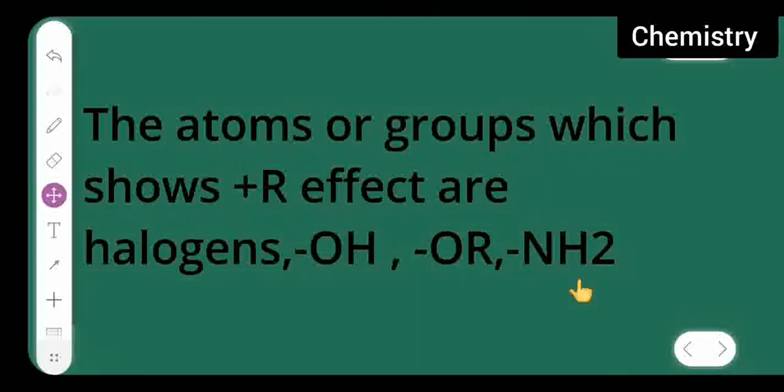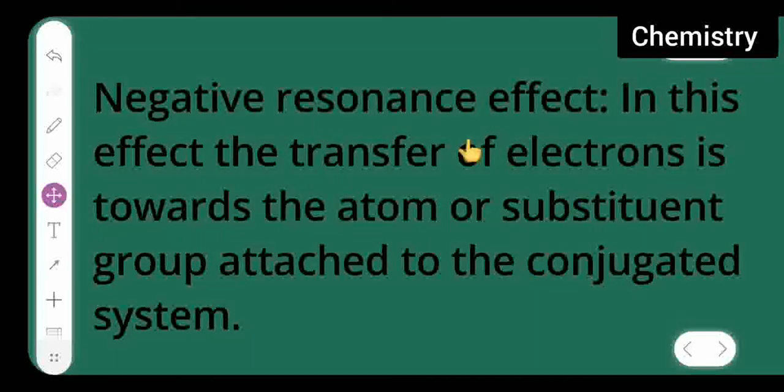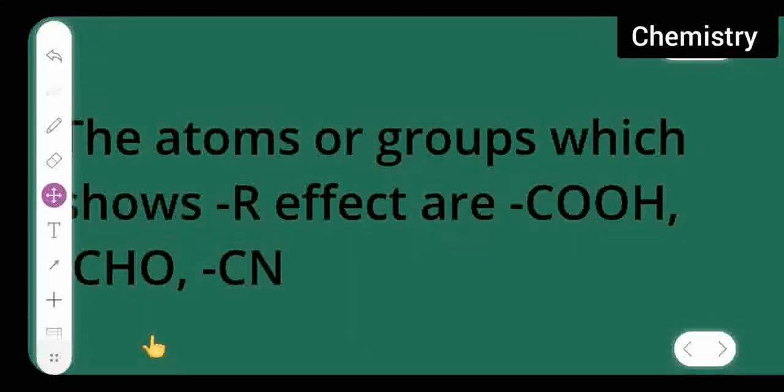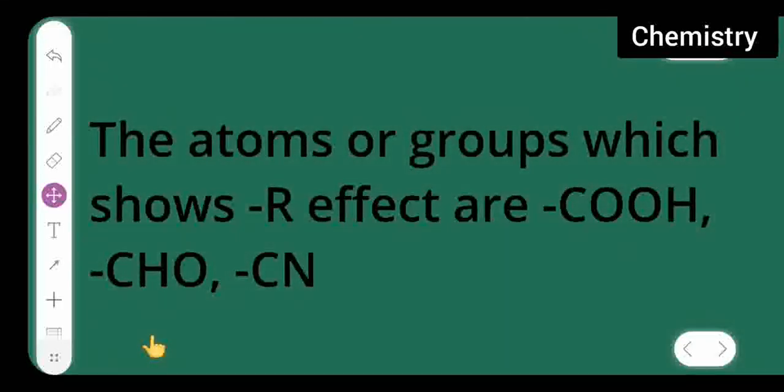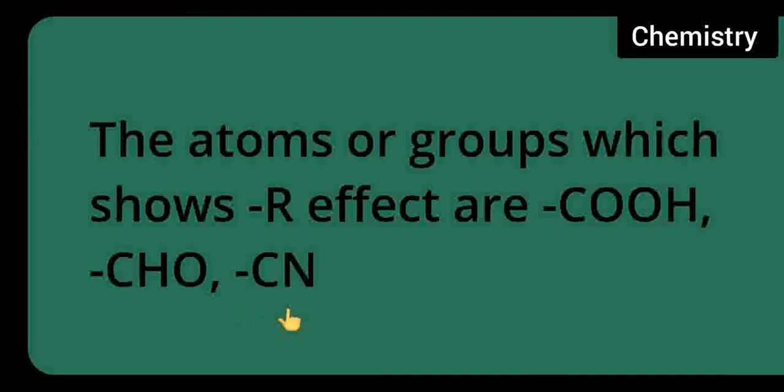Next is negative resonance effect. In this effect, the transfer of electrons is towards the atom or substituent group attached to the conjugated system. And here the atoms or substituent groups which show negative resonance effect are -COOH, -CHO, and -CN.